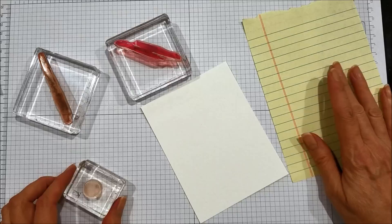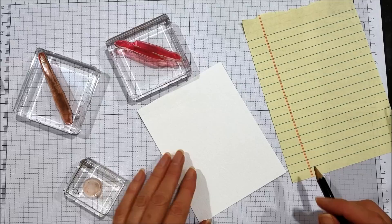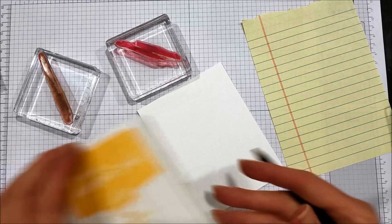I will be using a piece of scrap paper to stamp off on before I stamp on to my paper, because you don't want full strength with some of the colors we're going to be using. The first color we're going to be using is Daffodil Delight.